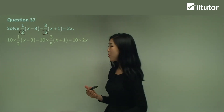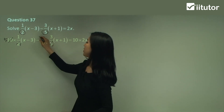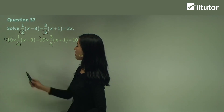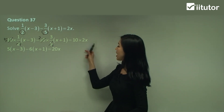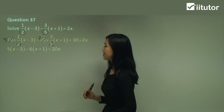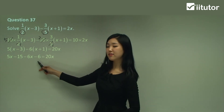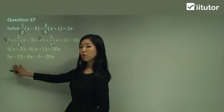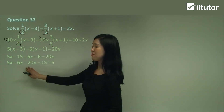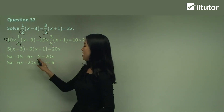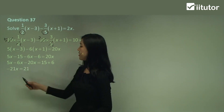10 divided by 2 — that becomes a 1 and a 5. 10 divided by 5 — that becomes a 1 and a 2. So we have 5 times (x − 3), and 2 times 3 is 6, so 6 times (x + 1), and 10 times 2x is 20x. Expand it all out: 5x minus 15, minus 6x, negative 6 times positive 1 is negative 6, equals 20x. Keep x's on the left — 5x minus 6x — and move the 20x to the left as negative 20x. The negative 15 becomes positive 15 and negative 6 becomes positive 6.